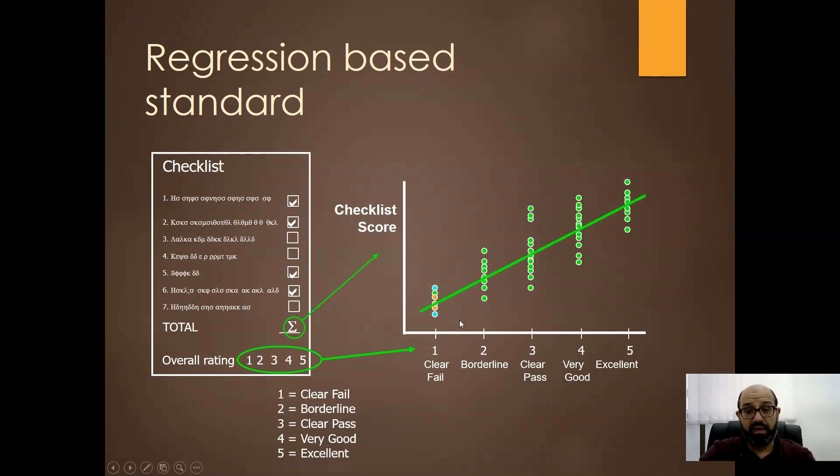Then we draw a regression line between the scores and based on this, the intersection between the borderline plots and the regression line, we determine our passing score. So this will be our passing score.